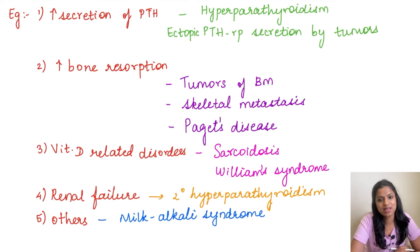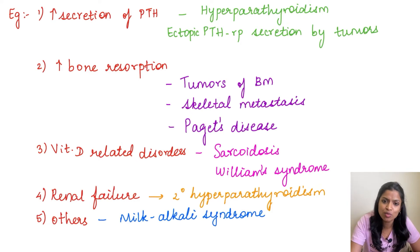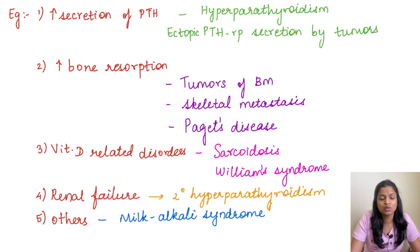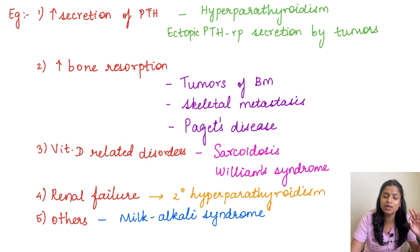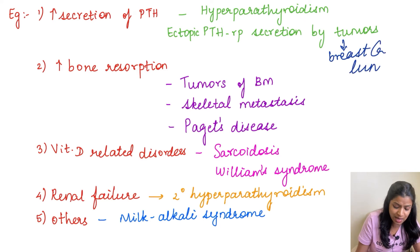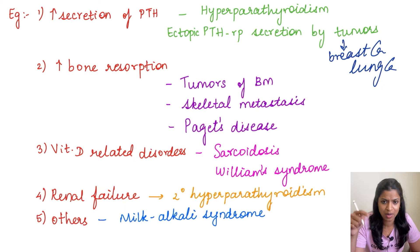Increased parathormone secretion leads to increased serum calcium. Hyperparathyroidism is the most common cause of hypercalcemia, most often due to parathyroid adenoma or parathyroid hyperplasia. Some tumors can also secrete parathormone-related protein (PTHrP), and this ectopic production of PTHrP will result in hypercalcemia. The most important tumors are breast cancer and lung cancer, both known to produce ectopic PTH-related protein.